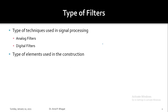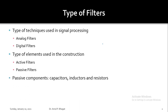Depending on the type of elements used in construction, filters can be categorized as active and passive filters. Passive components such as capacitors, inductors, and resistors are used to construct passive filters, while active components such as operational amplifiers or transistors are used to construct active filters, supporting operations such as signal isolation, buffering, or voltage amplification.